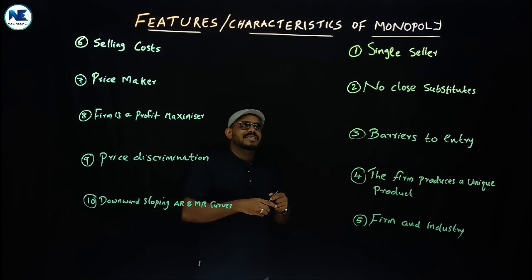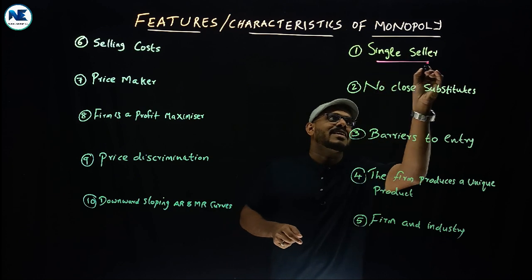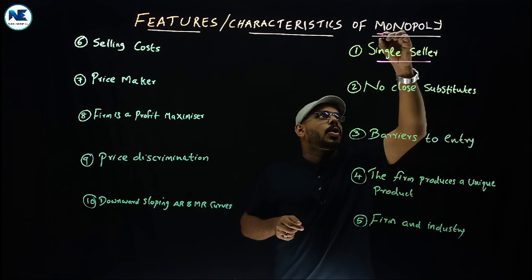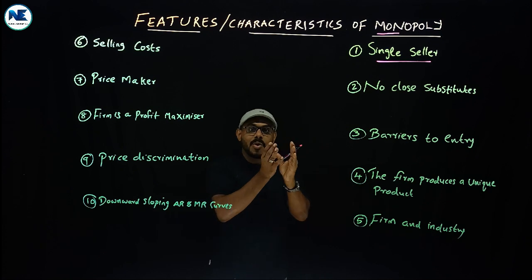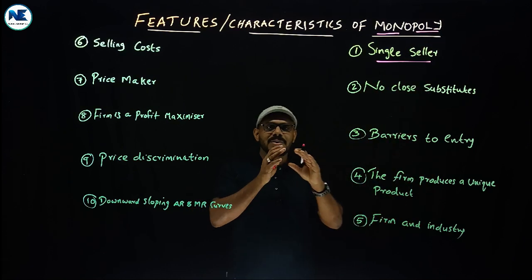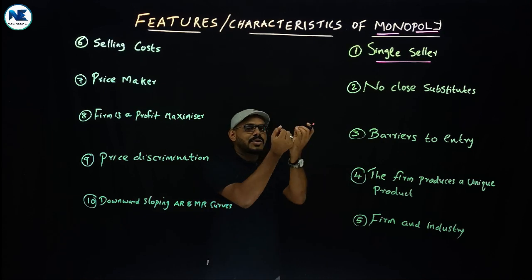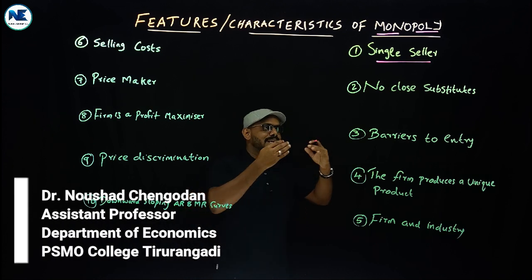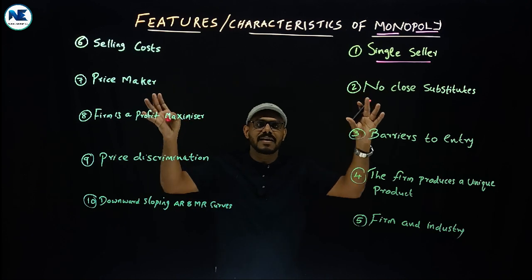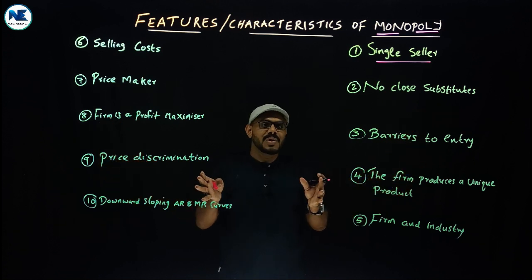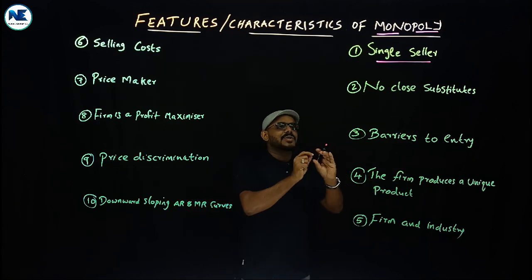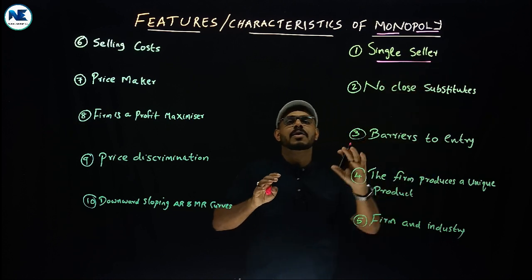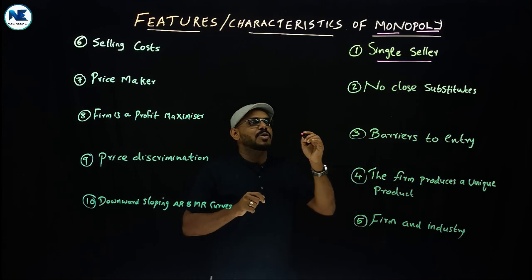The first feature is single seller. When we break the term, 'mono' means single or solo or alone, and 'poly' means to sell or seller — derived from the Greek word. Monopoly means single seller. Under monopoly, in the monopoly market, we can see a single seller who dominates the entire market with no competition. That is why the first and most important feature or characteristic of monopoly is single seller or single producer.